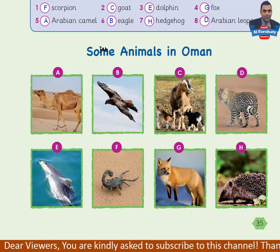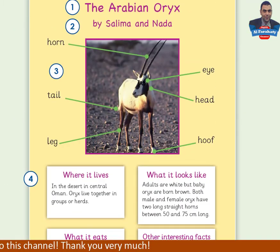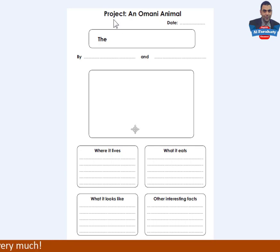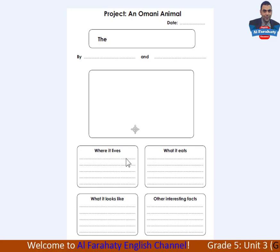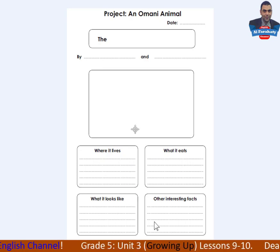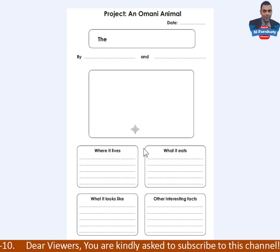Dear students, you are asked to choose one of these animals and to make an information page like that. Your teacher can give you a page like this. Project — an Omani animal. Write the name of the animal you choose, then 'by' and you and your friend. If you want to do this by yourself, remove 'and' and write only your name. Then put a picture of the animal, then complete the information boxes: write where it lives, what it eats, what it looks like, and other interesting facts. This is a simple task — you can do it by yourself or with a partner.